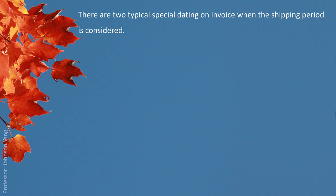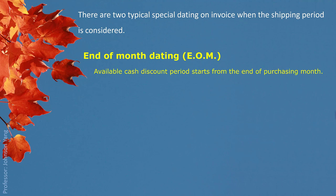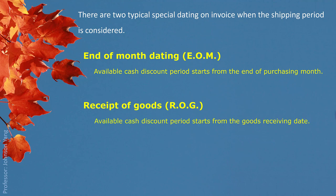There are two typical special dating types on an invoice when the shipping period is considered. End of month dating, shortened as EOM: the available cash discount period starts from the end of the purchasing month, so the cash discount period automatically shifts to the end of the month. Receipt of goods, ROG: the available cash discount period starts from the goods receiving date, used when a long shipping period is expected.